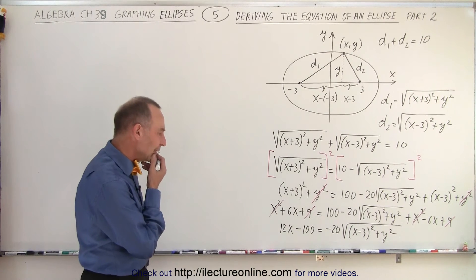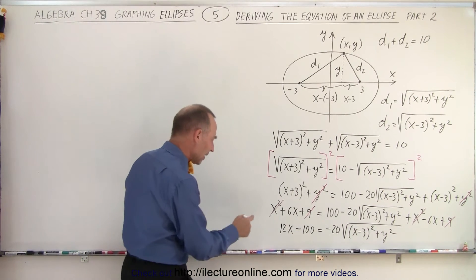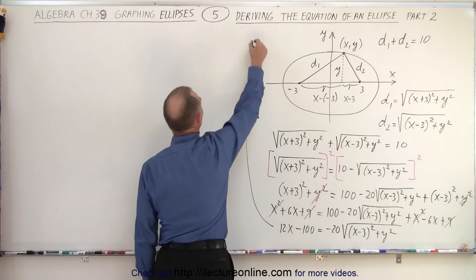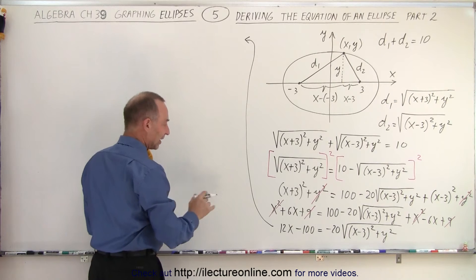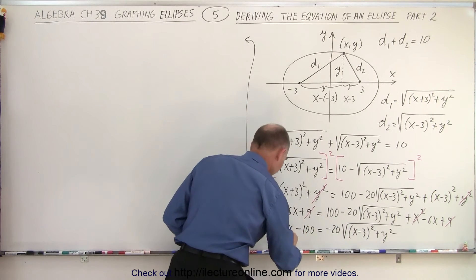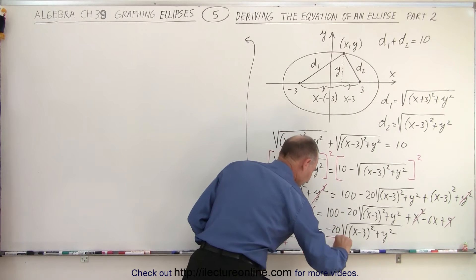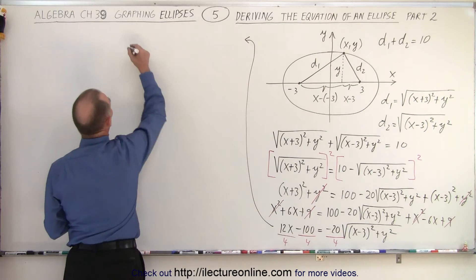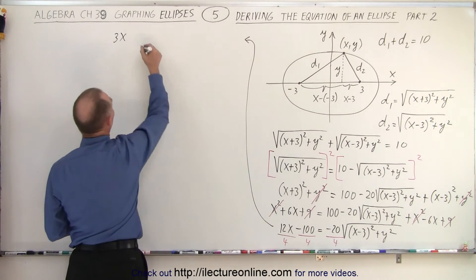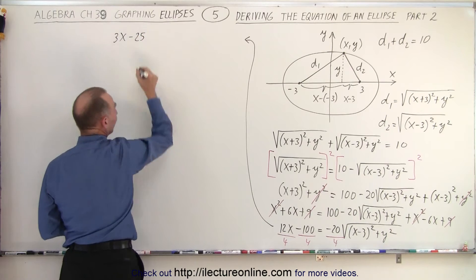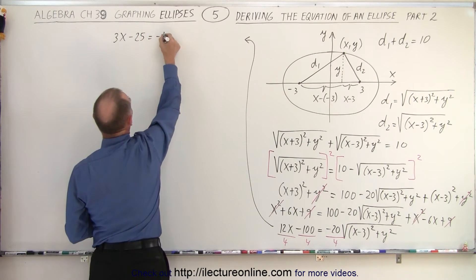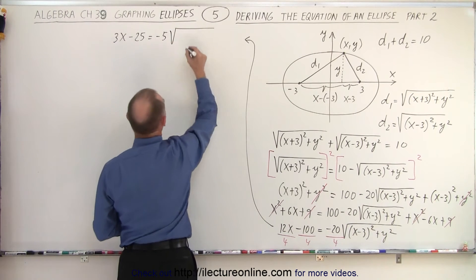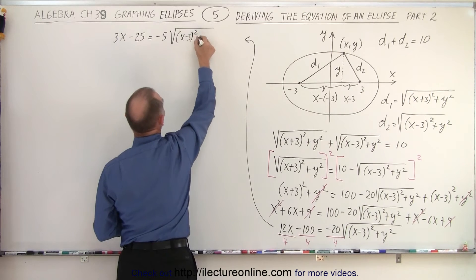Now if we take a look, we can divide this by 4 to simplify. Dividing everything by 4, on the left side we end up with 3x minus 25 is equal to minus 5 times the square root of x minus 3 squared plus y squared.